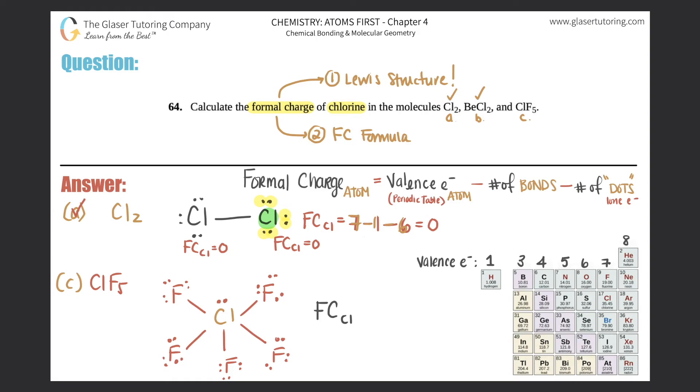Formal charge of chlorine is valence electrons comes first. So valence is seven. So seven minus number of bonds. How many bonds does this chlorine have? Well, it has one, one, two, three, four, five.